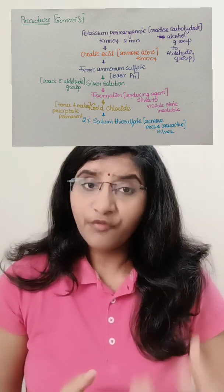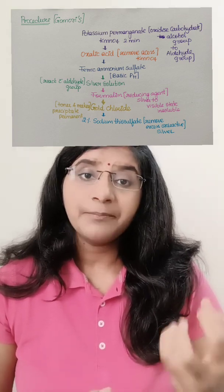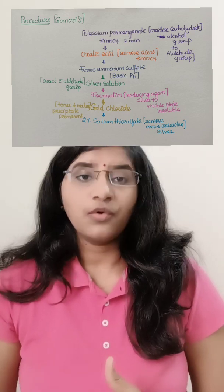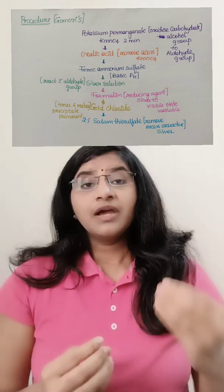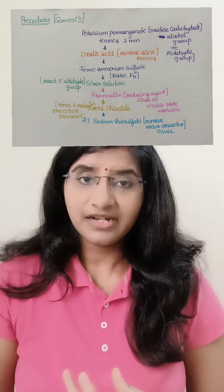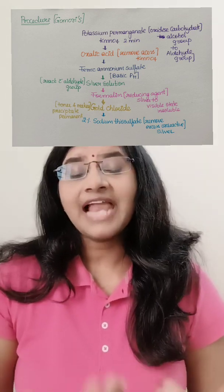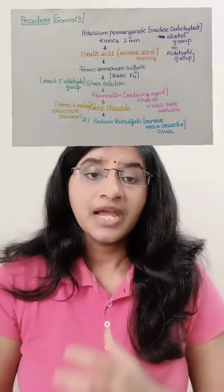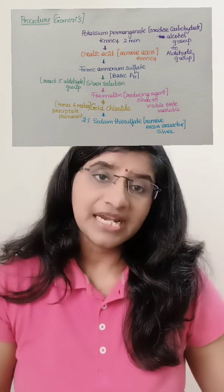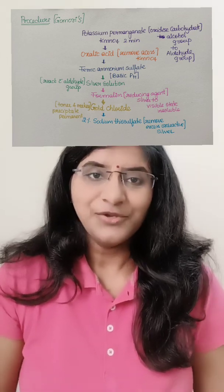After that, wash the sections. To make the precipitate stay longer and permanent, we add gold chloride, which acts as a toner and intensifies the color of the black precipitate, making it permanent. Whatever excessive unreacted silver remains is then removed by sodium thiosulfate. After all this, add a counterstain with neutral red, then put it through graded alcohols, then the clearing agent xylene, then mount — and your sections are ready.